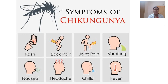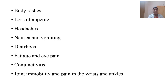Apart from that, other symptoms include rashes, back pain, and joint pain. The child may have symptoms of vomiting, increased body temperature, chills, nausea, and headache. There will also be eye pain, and some children may have complaints of conjunctivitis, as well as joint immobility, usually in the wrist and ankles.